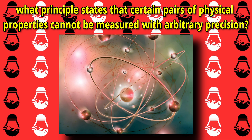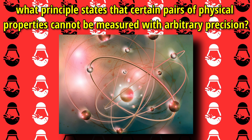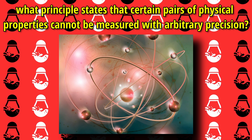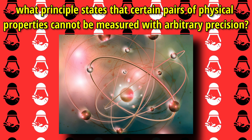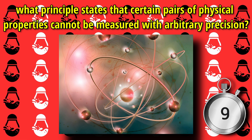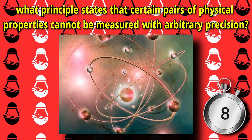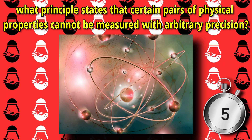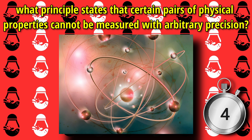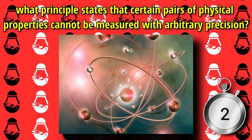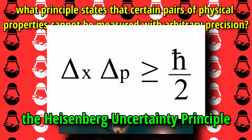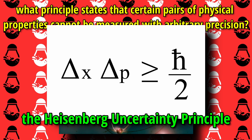Next question. In quantum mechanics, what principle states that certain pairs of physical properties cannot be measured with arbitrary precision? The answer is the Heisenberg uncertainty principle.